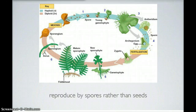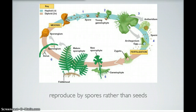In this image, you can see the life cycle of a seedless vascular plant. This is specifically a fern. There are two halves to the life cycle: a haploid half and a diploid half. One thing that the life cycle does is it reproduces by spores rather than seeds.